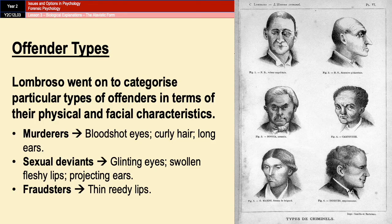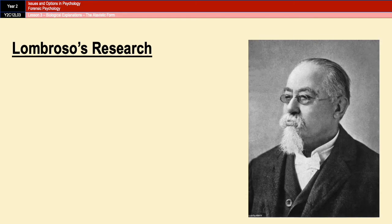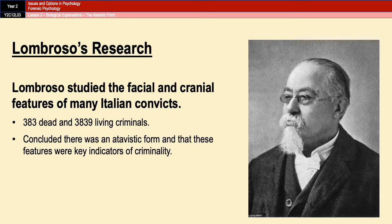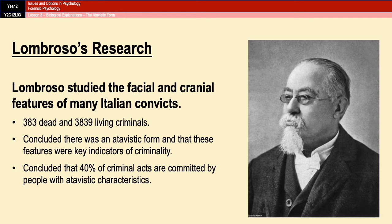There are a lot of different types of criminals with a lot of different facial features suggested in his book. In Lombroso's defense, as much as we now know his theory is complete garbage, he did study over 4,000 criminals in order to come up with the theory — specifically 383 dead criminals and almost 4,000 living criminals — all studied in terms of their facial and cranial features. From that research he concluded that there was an atavistic form, and that these features were indicators of criminality. He even concluded that 40% of criminal acts were committed by people with atavistic characteristics.